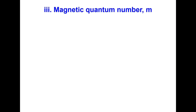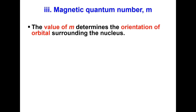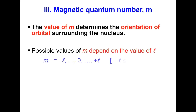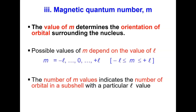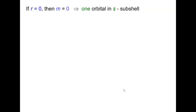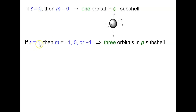The third quantum number is the magnetic quantum number M. The value of M determines the orientation of the orbital surrounding the nucleus. The possible values of M range from −L to 0 to +L, and the number of M values indicates the number of orbitals in the sub-shell. If L=0, M has only one value (0), so there is one orbital in the S sub-shell. If L=1, M has three values (−1, 0, +1), so there are three orbitals in the P sub-shell.